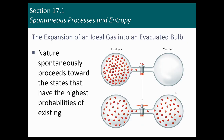Nature is going to want to go towards states where there are more possibilities for how molecules can be arranged. For example, if we take an ideal gas and it's all on one side of a bulb — if we open up the valve, then the gas will disperse itself. That's because there's more randomness when it does that — it's going to go to more microstates, more possibilities for how they can arrange.